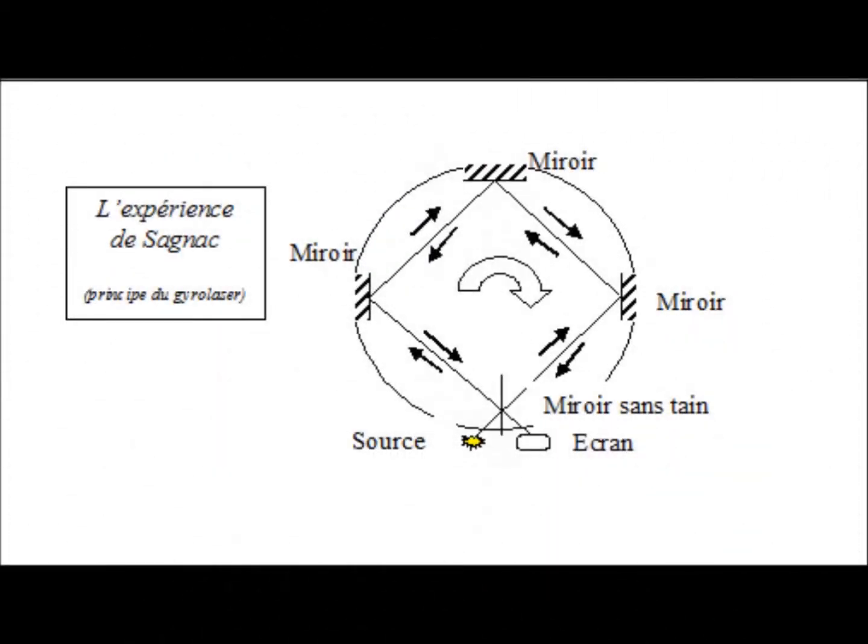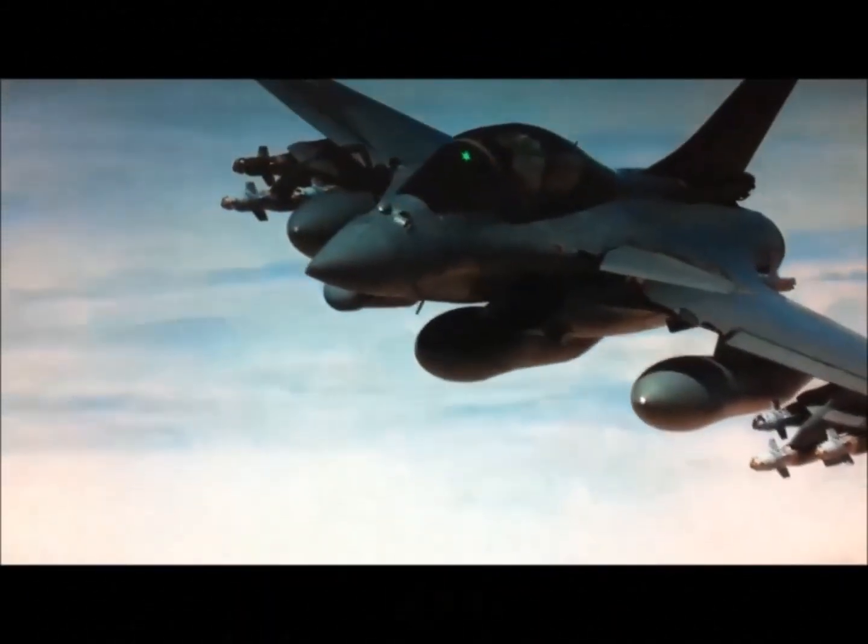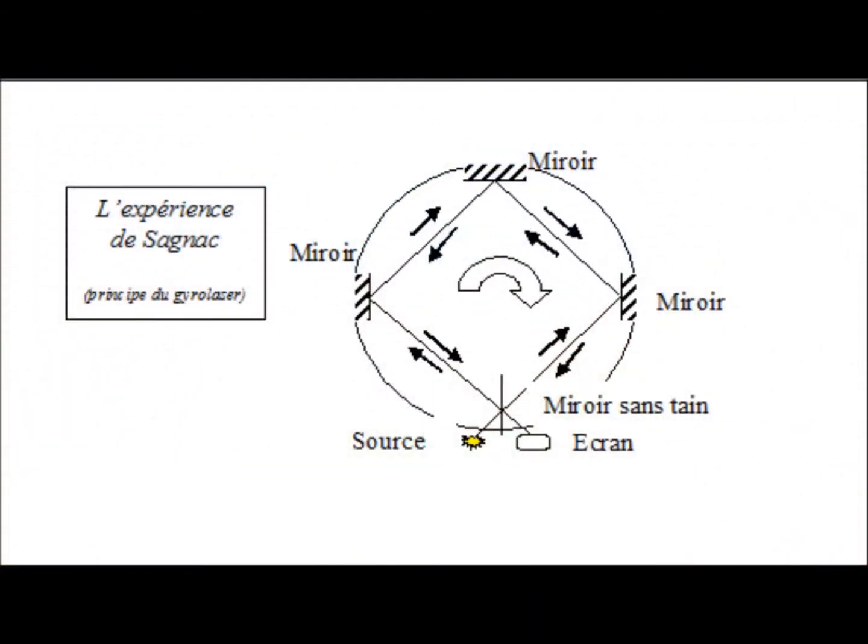Conversely, in the Sagnac experiment, the disk carrying the mirror rotates relative to the medium of the space and the rotation can be detected. This is the principle of laser gyros. They are installed in all planes.